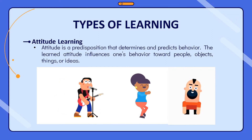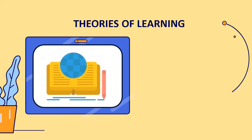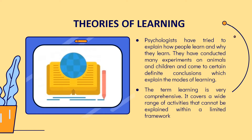After discussing the meaning and nature of learning, as well as the seven types, let us move to the theories of learning. Psychologists have attempted to explain how and why people learn, leading them to conduct numerous experiments on animals and children, and have reached certain conclusions about learning modes, which are referred to as learning theories. The term learning is extremely broad, encompassing a diverse range of activities that cannot be adequately explained within a single framework.